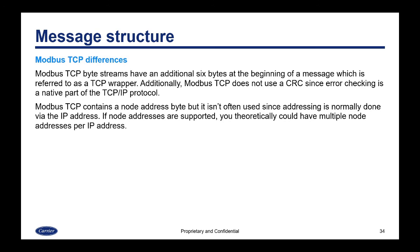Modbus TCP byte streams have an additional six bytes at the beginning of a message, referred to as a TCP wrapper. Additionally, Modbus TCP does not use a CRC since error checking is a native part of the TCP/IP protocol. Modbus TCP contains a node address byte, but it isn't often used since addressing is normally done with the IP address. If node addresses are supported, you theoretically could have multiple node addresses per IP address.